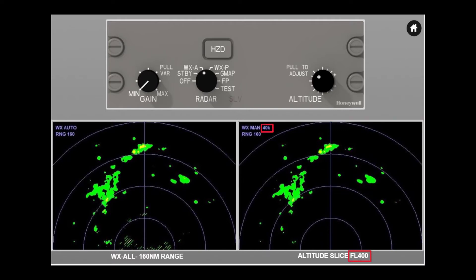The selected altitude slice is shown in two places. The selected range is also shown in two places. The range marks are scaled to the selected range, and for the 160 nautical mile range selection currently shown, they are at 40, 80, 120, and 160 nautical miles.